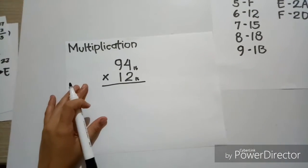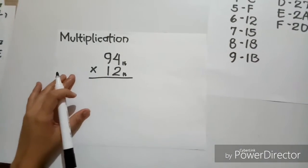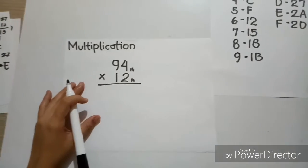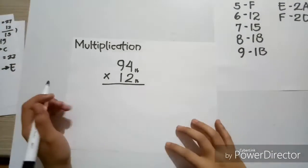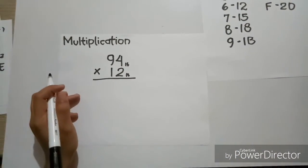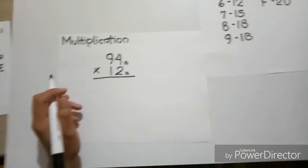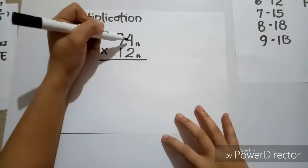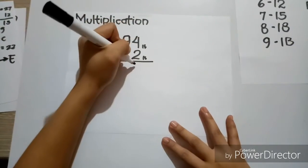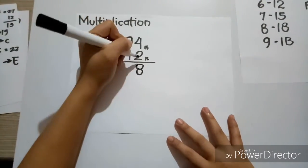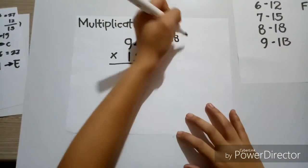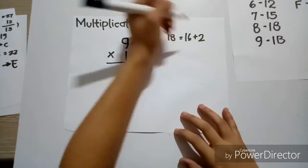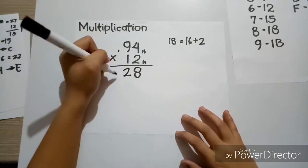Now, for the multiplication, let's have 94 base 16 times 12 base 16. So, 4 times 2 is equal to 8. And 9 times 2 is equal to 18, which is equal to 16 plus 2. So, we're going to take 2 and carry 1, then bring it down.